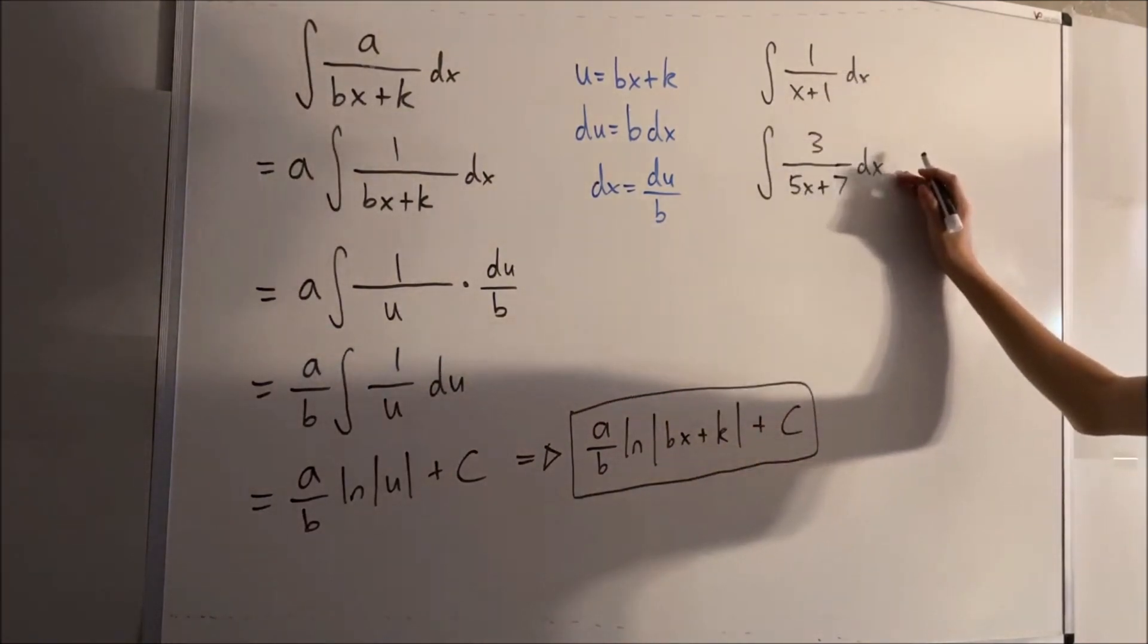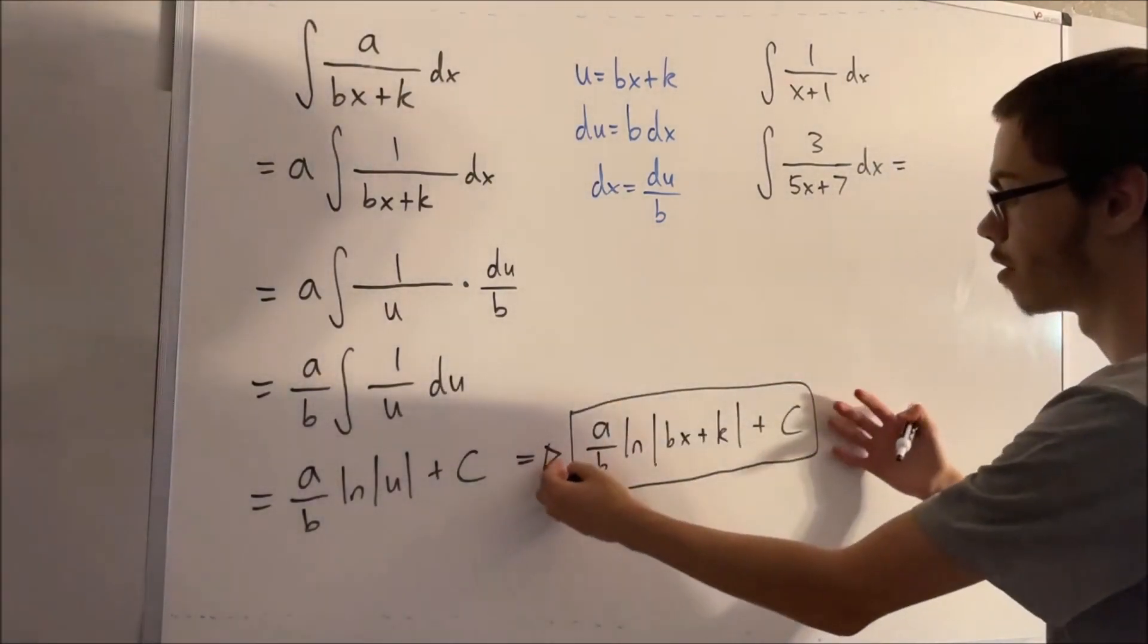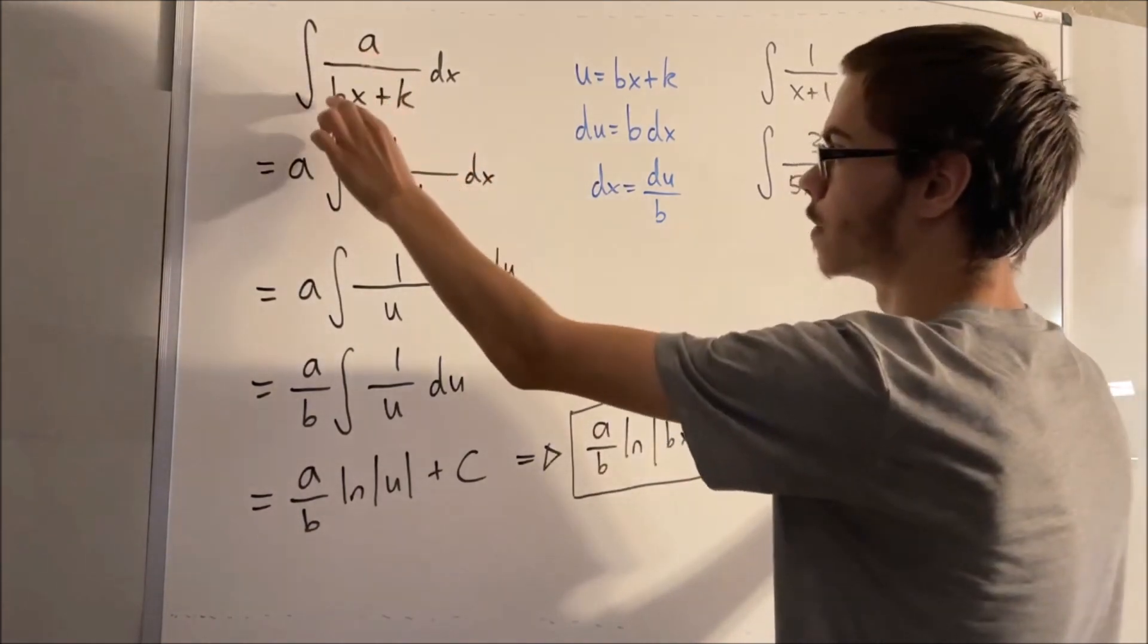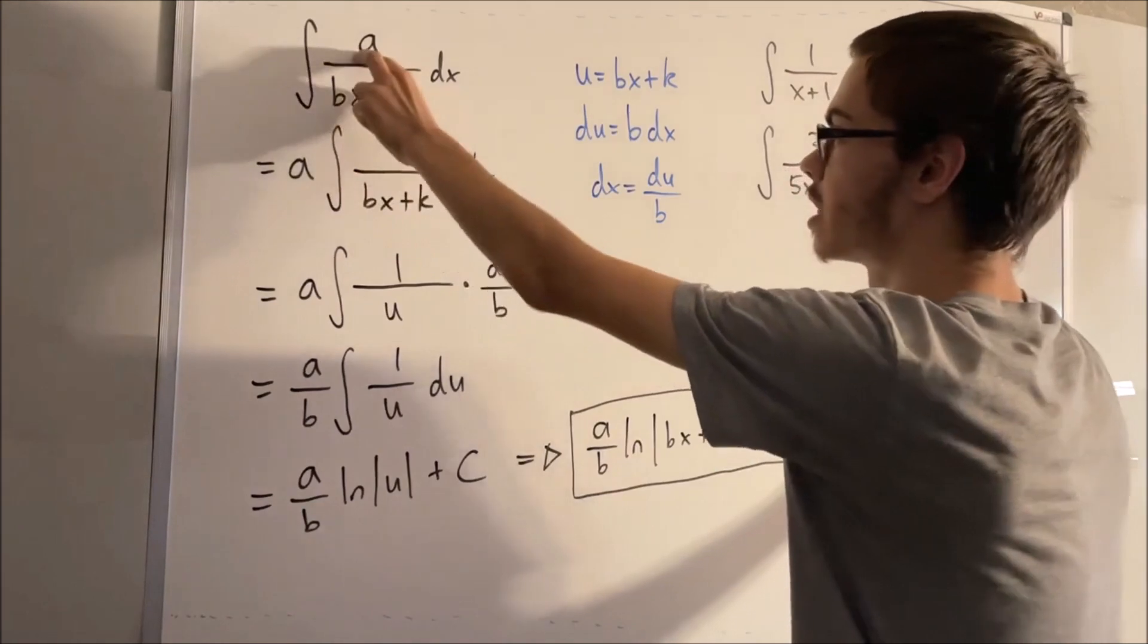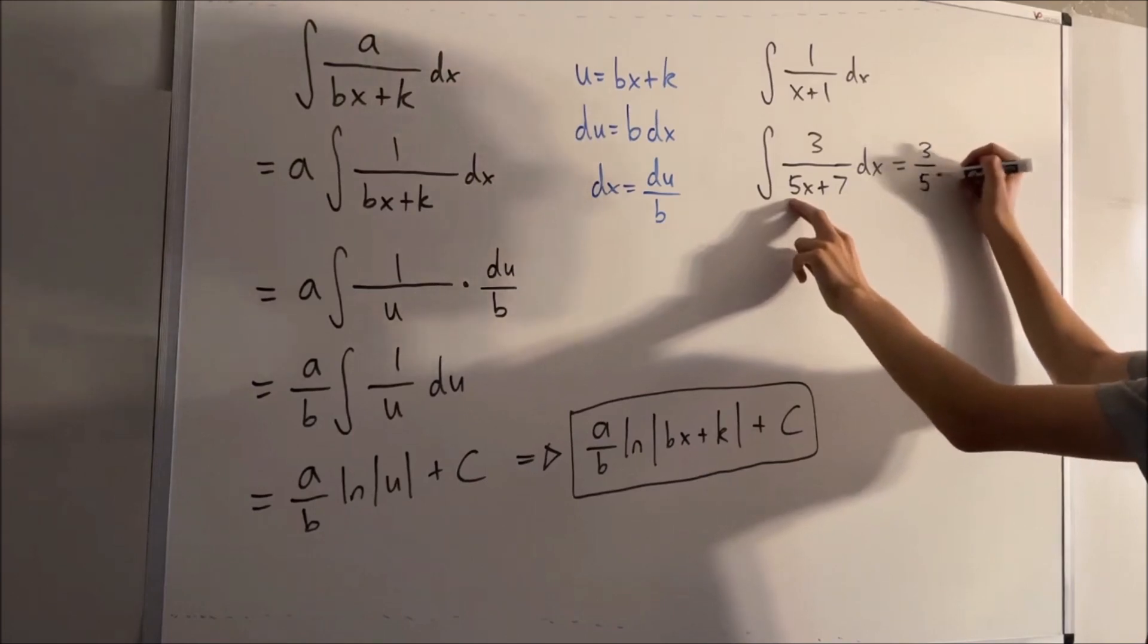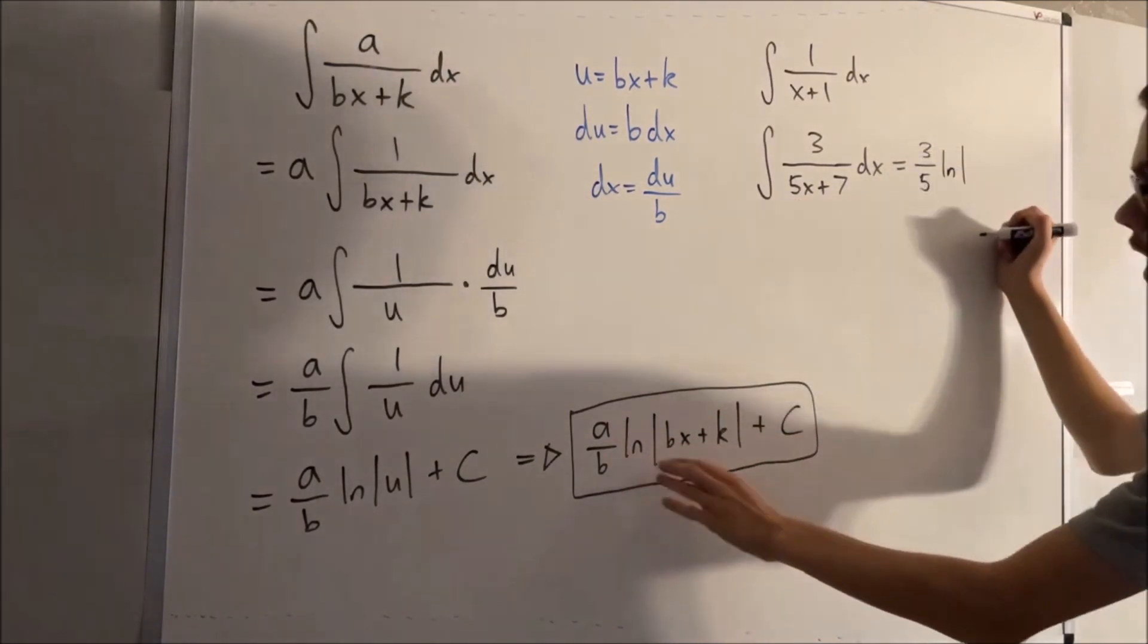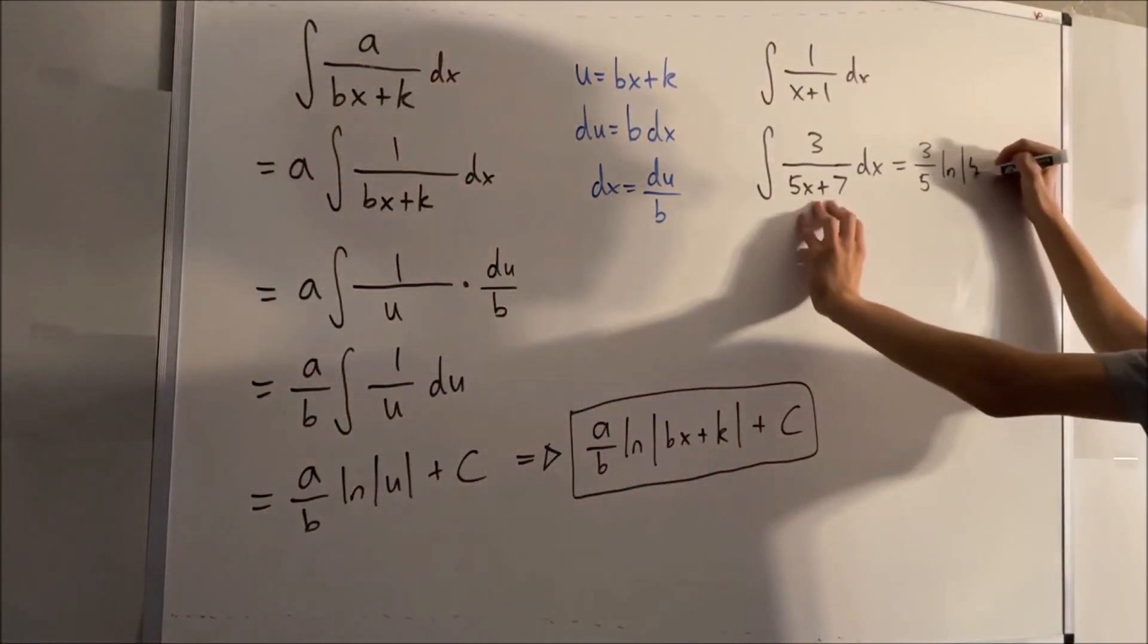Really notice how all we're doing here is we're doing a over b, the numerator divided by the coefficient in front of the x, which in this case, a over b, in this case, it's 3 over 5. So really it's just 3 over 5 times the natural log of what we have in the denominator, which is our 5x plus 7 right here.